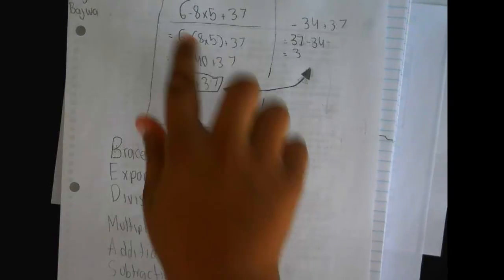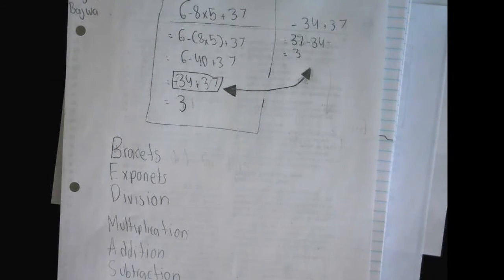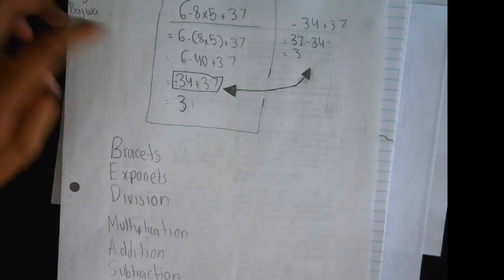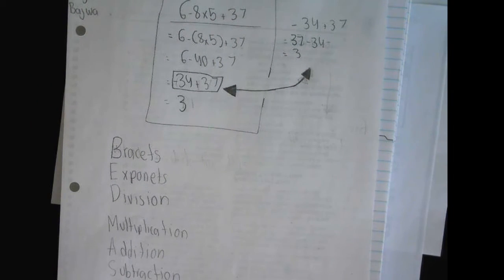So what we did first was we wrote the original answer. So 6 minus 8 times 5 in brackets plus 37. So we first calculated this which was in brackets, then it was 6 minus 40 plus 37, then it was minus 34 plus 37, which equals 3.